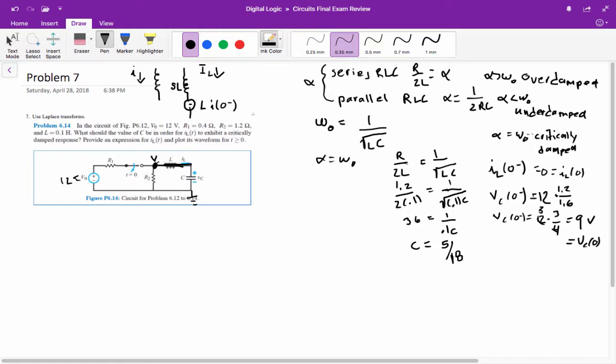For a resistor, a resistor has the same value in the S domain as it does in the time domain. A capacitor in the time domain has capacitance C with current IC going this way. In the S domain, the capacitor impedance becomes 1 over SC, and we have a voltage source that is VC of 0 over S.